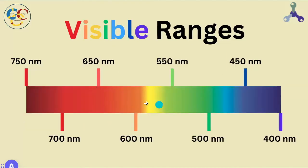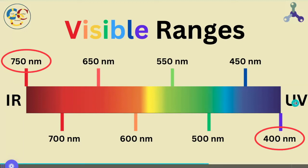Smack dab in the middle of the spectrum, i.e. medium frequency and medium wavelength, we've got visible light. And it's worth memorizing that the upper and lower limits of wavelength are dark red being 750 nanometers right at the cusp of infrared, violet being 400 nanometers right at the cusp of ultraviolet.